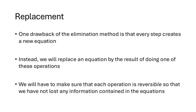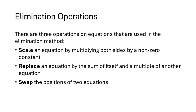There are three main elimination operations. First, we scale an equation by multiplying both sides by a non-zero constant. It must be non-zero because the operation needs to be reversible — multiplying by zero would prevent us from recovering the original equation, but multiplying by any non-zero number allows us to reverse it by multiplying by the reciprocal. Second, we can replace an equation by the sum of itself and a multiple of another equation, which is reversible by adding the negative of that multiple.